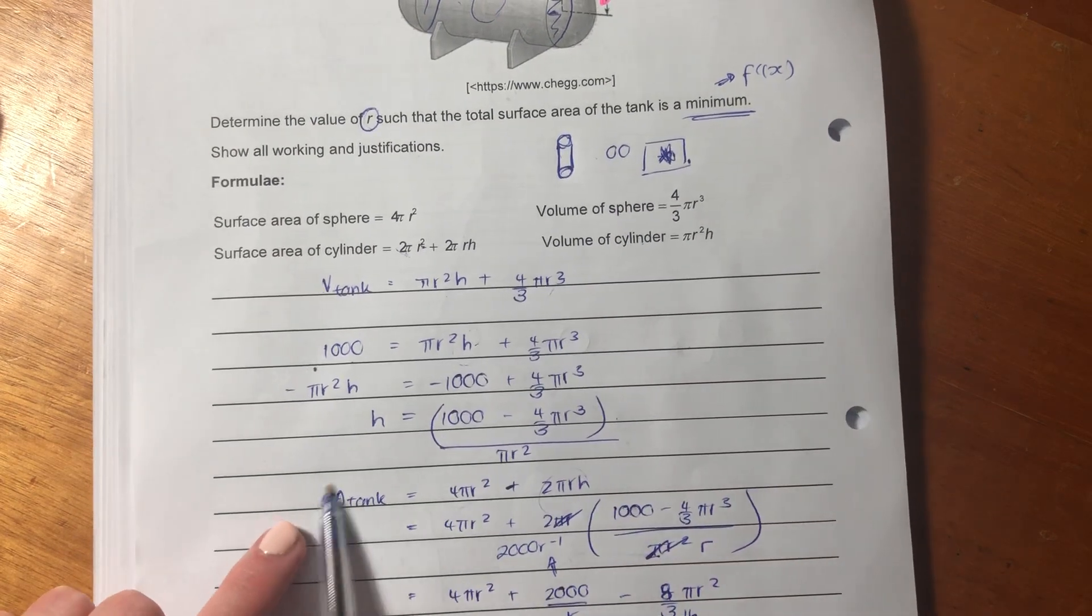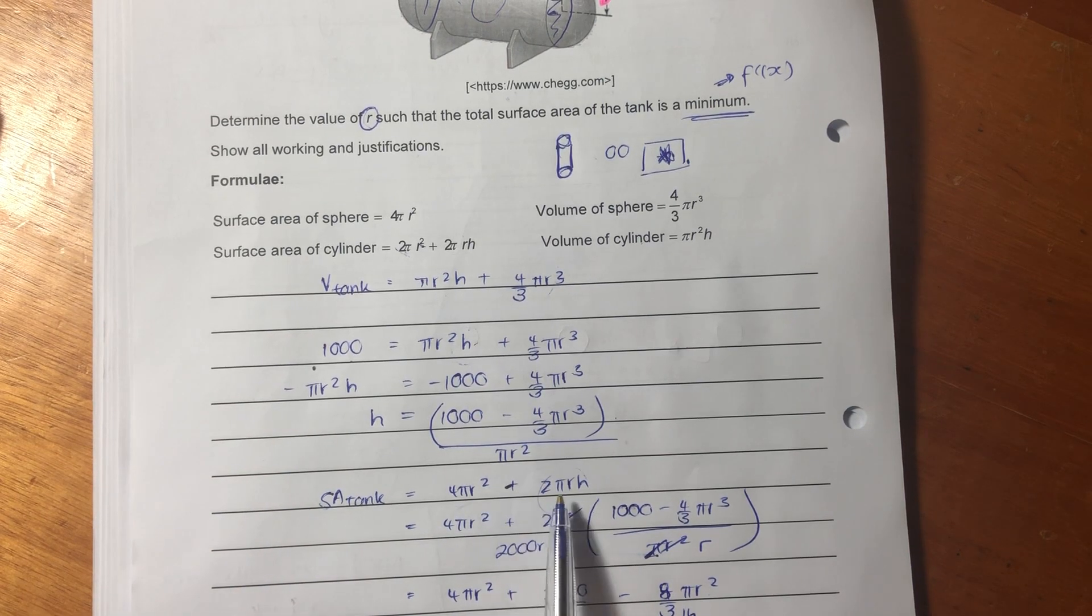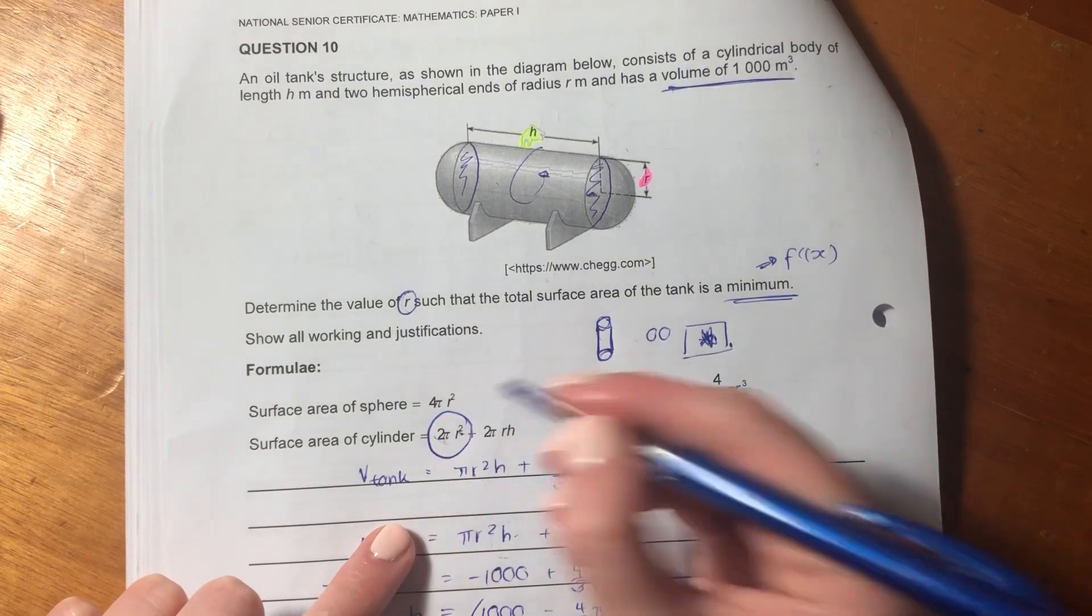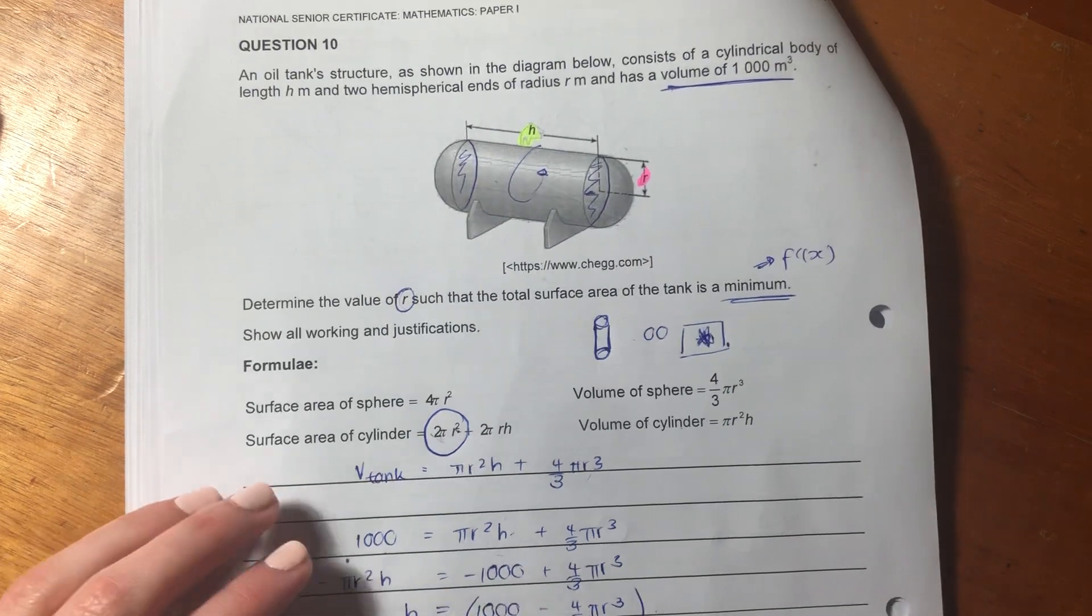So, now we say the surface area of the tank. So, now you may see that I've written here 4πr² plus 2πrh. So, I haven't included this part of the surface area of the cylinder. And you could be saying, why is that?